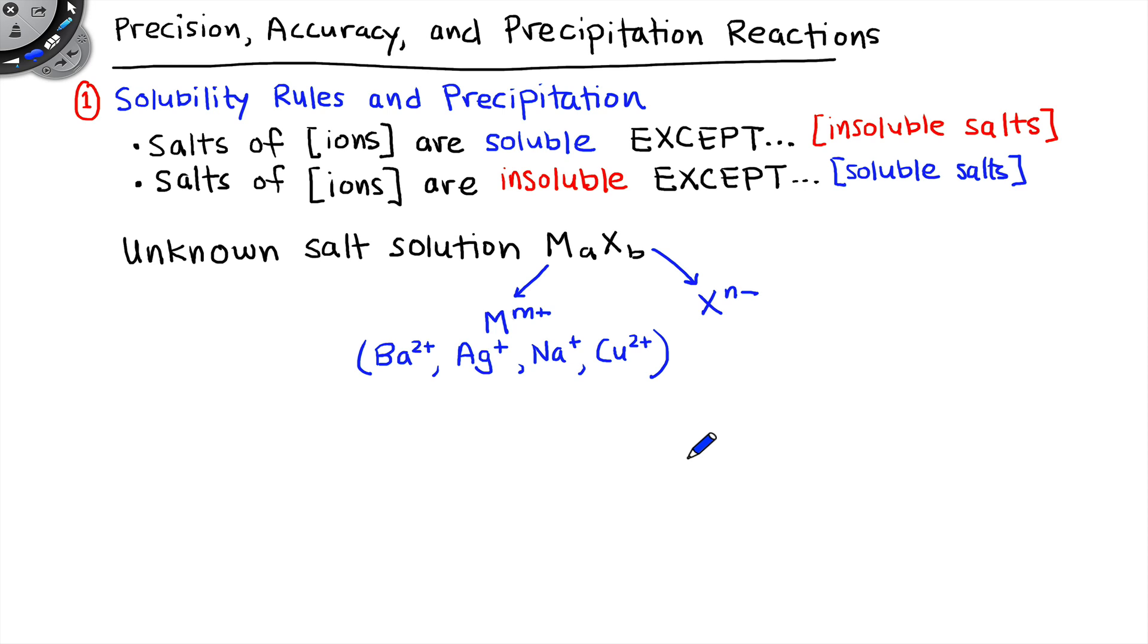Ag+, Na+, or Cu2+, and on the anion side we might have either chloride, nitrate, or sulfate. So these are the possibilities in all the various permutations. You could imagine there are 12 different possibilities for the unknown salt solution based on the possibilities here, 4 times 3.